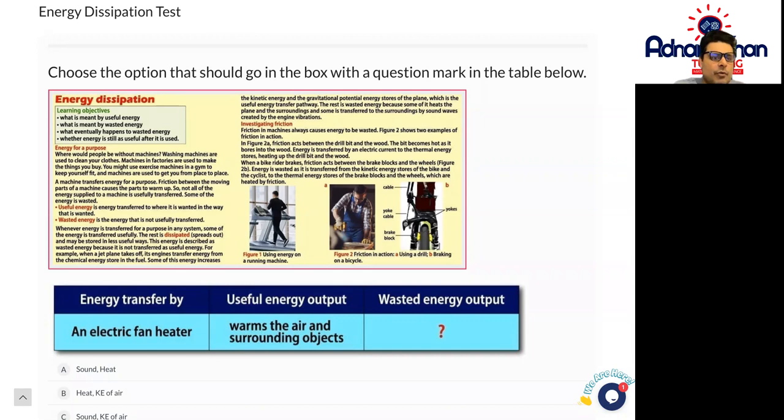No system is perfect, and whenever there is a change in a system, energy is transferred and some of that energy is dissipated.